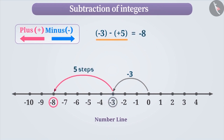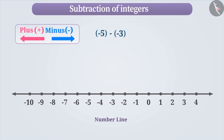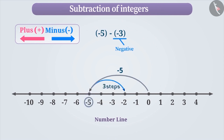Similarly, if we have to find the value of minus 5 minus minus 3, mark minus 5 on the number line, which is 5 steps towards the left of 0. Since we need to subtract the negative integer minus 3, we move 3 steps towards the right side of minus 5. Thus, we reach minus 2, which is the result of minus 5 minus minus 3.